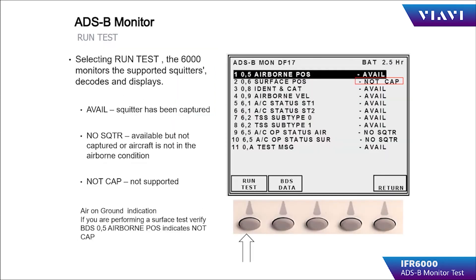Pressing the run test soft key will place the IFR-6000 in ADS-B monitor mode. As the IFR-6000 monitors the squitters, the menu items that are available will be filled in.